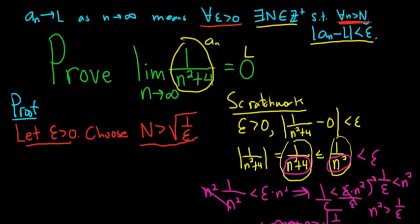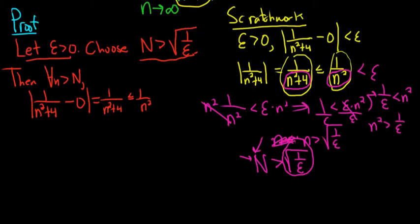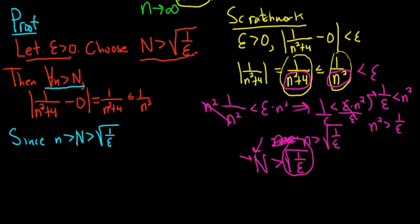Then for all little n greater than capital N, we're going to look at the distance between a sub n, which is 1 over n squared plus 4, and L, which is 0. So this is equal to 1 over n squared plus 4. We can drop the absolute value. It's less than or equal to 1 over n squared. Now let's justify why this is less than epsilon. Since n is bigger than capital N, which is bigger than the square root of 1 over epsilon...